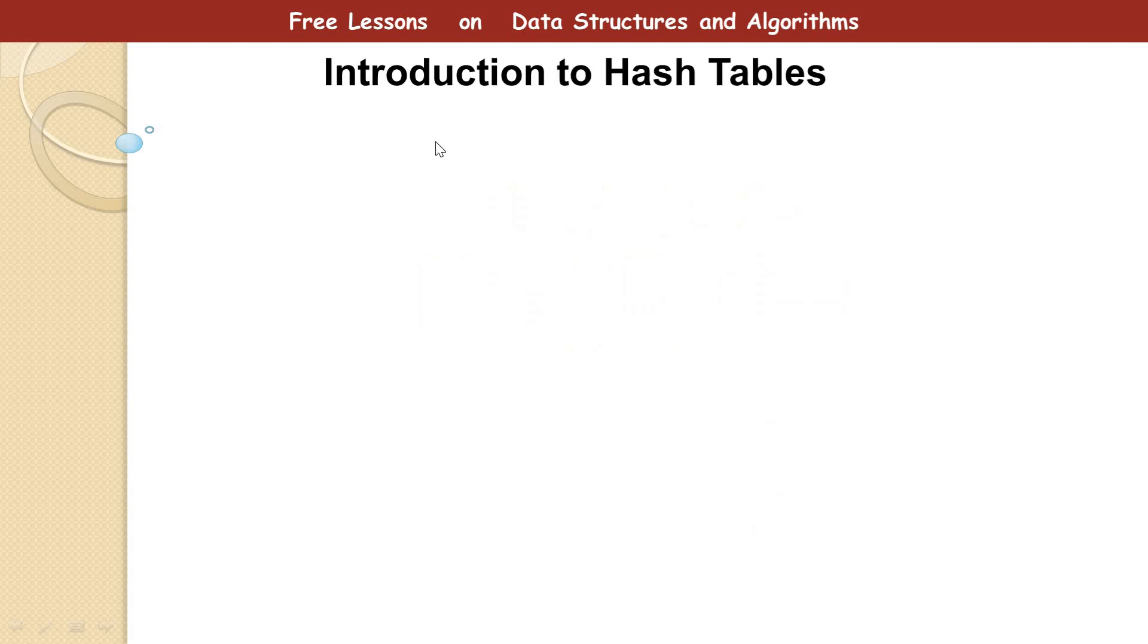Alright, so a hash table behaves about the same way as an array. What it means is that you need to store data in a key-value pair.